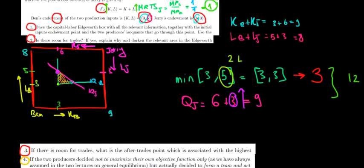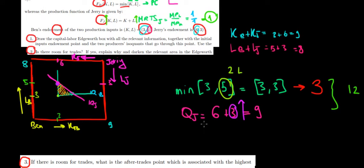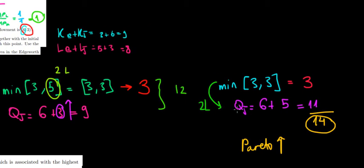Let's go back here and remember what we did in the previous video. We had the trade-off between labor from Ben to Jerry, and we saw that we increased production to 14 units, but we still had two producers: Ben and Jerry.